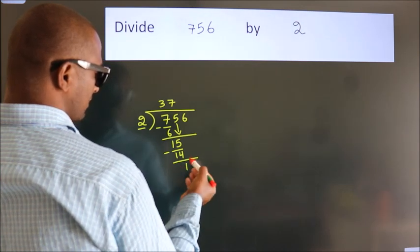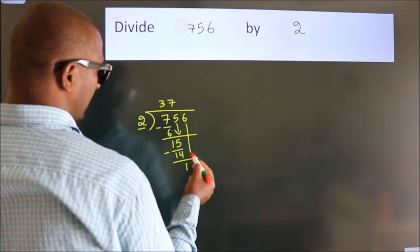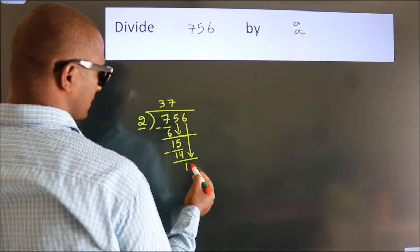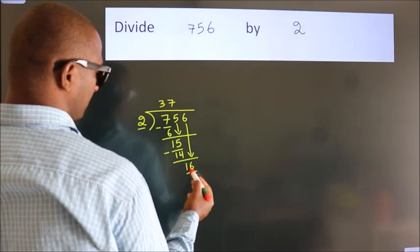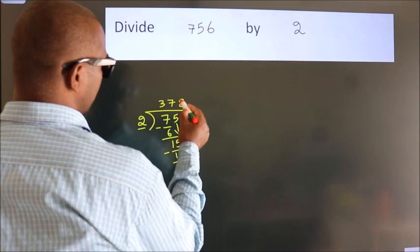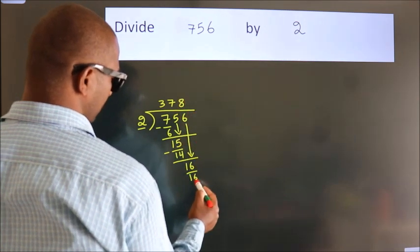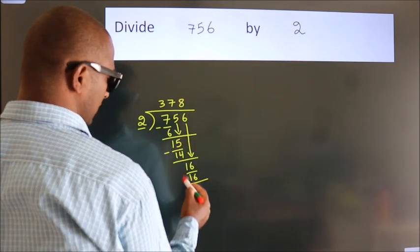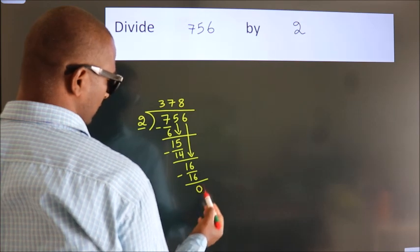After this, bring down the beside number. 6 down, so 16. In the 2 table, 2 times 8 is 16. Now we subtract and get 0.